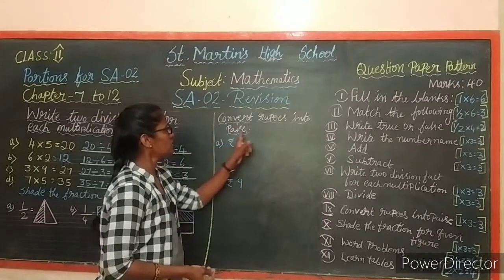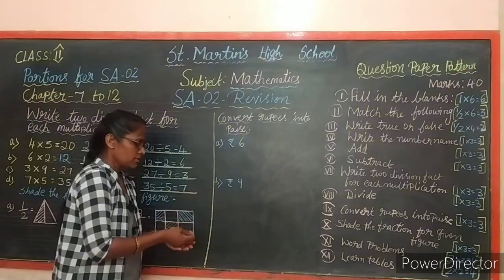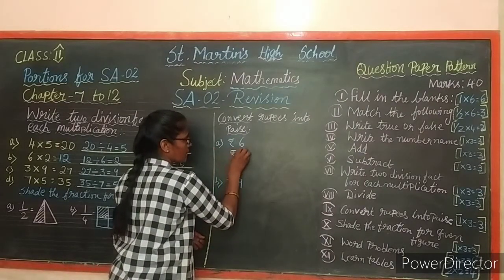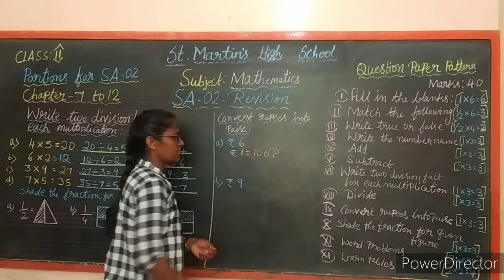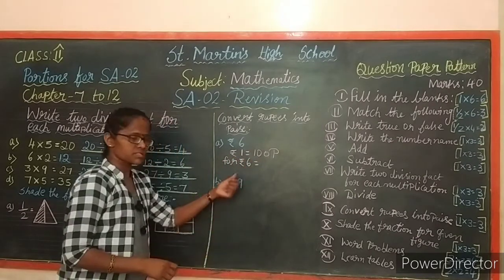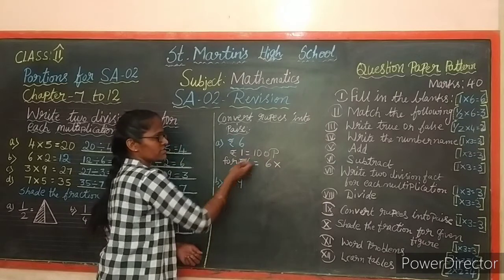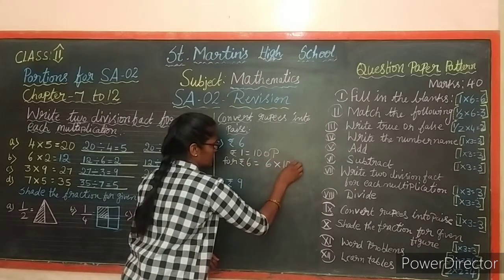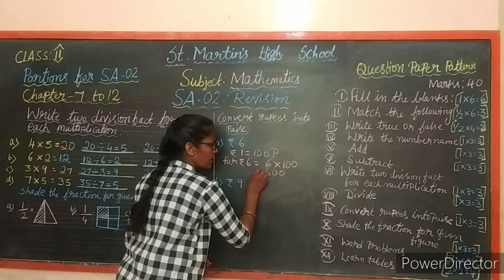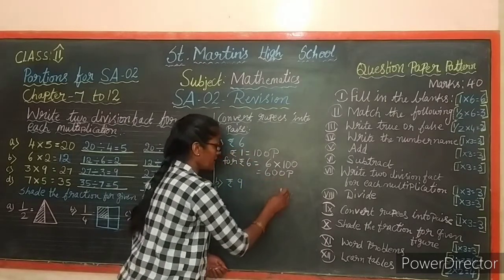Now convert rupees into paise. The rupees are already given. Since 1 rupee equals 100 paise, for rupees 6: 6 into 100 equals 600 paise. So rupees 6 equals 600 paise.